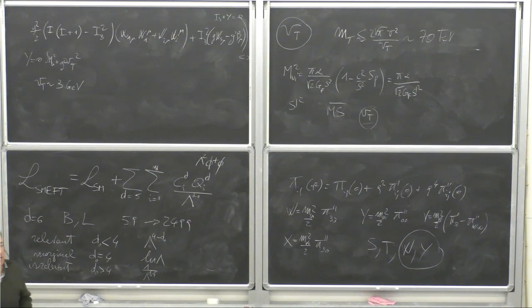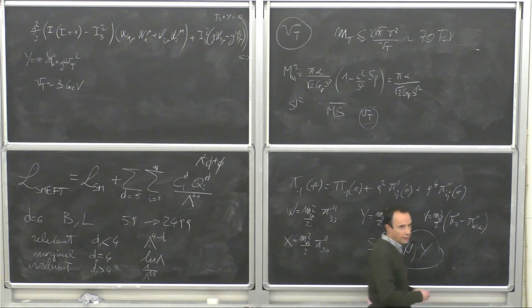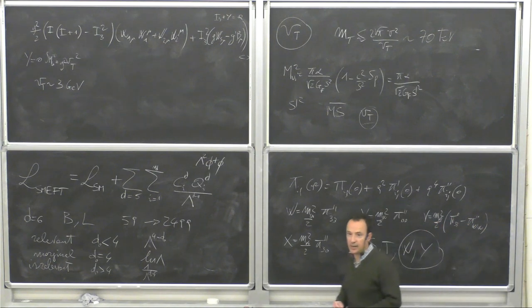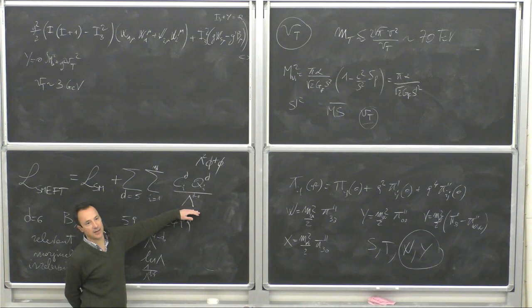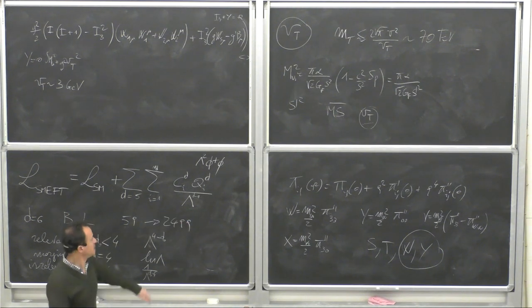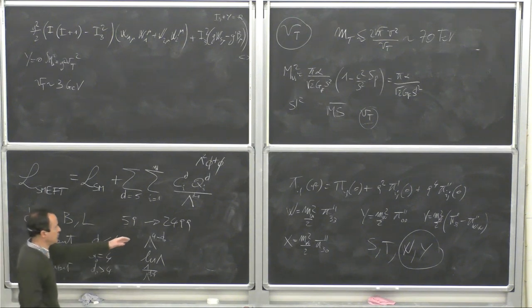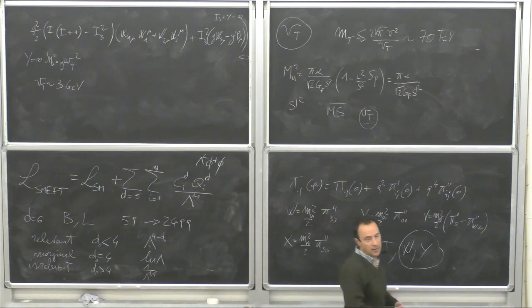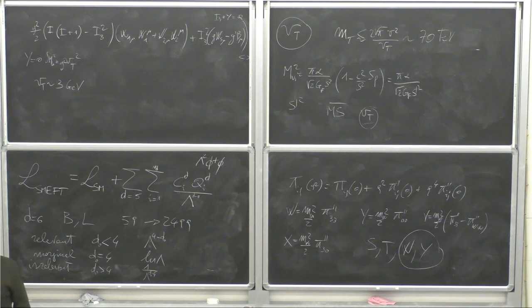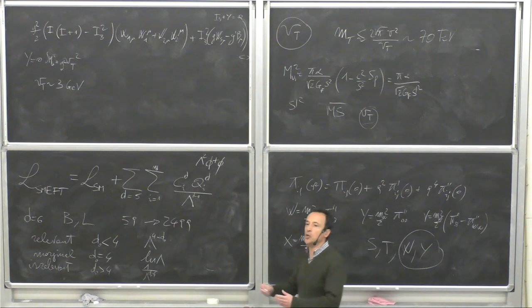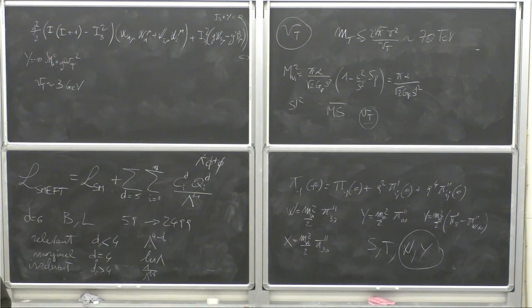There are several ways to gain sensitivity on Λ through precision observables. From proton decay you get Λ ~ 10¹⁵ GeV; from CP violation in K-K̄ mixing you can probe up to Λ ~ 10⁵ TeV. However, if there is a flavor symmetry forbidding new sources of flavor and CP violation — minimal flavor violation — you cannot probe 10⁵ TeV with K-K̄ mixing and you drop back to much lower scales.